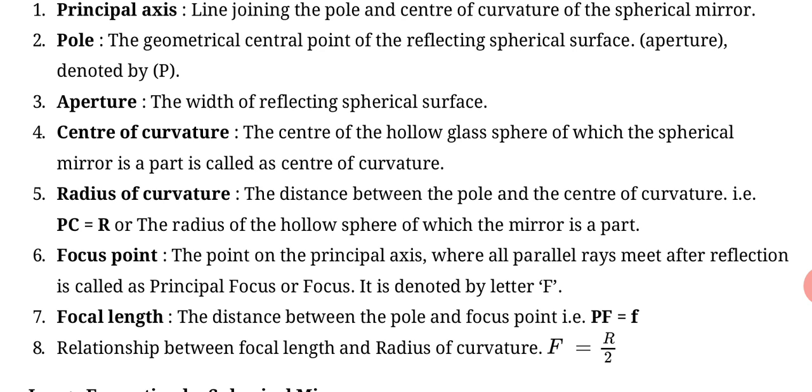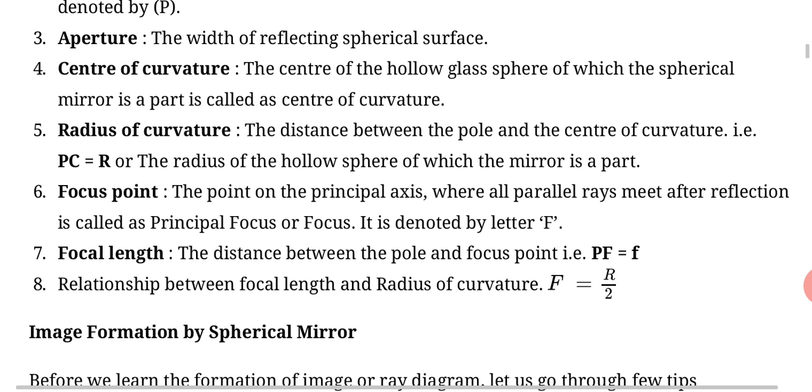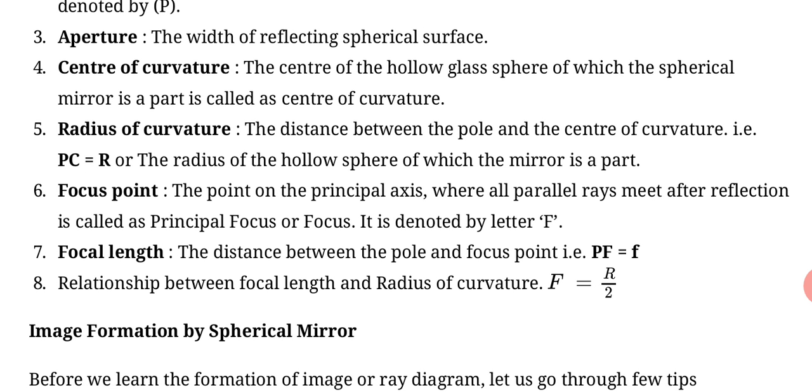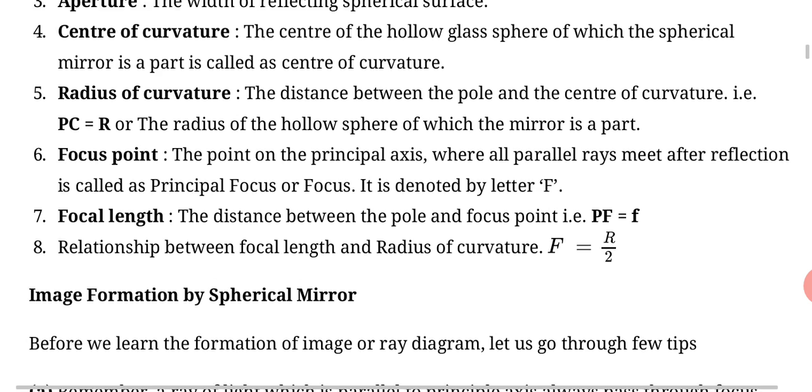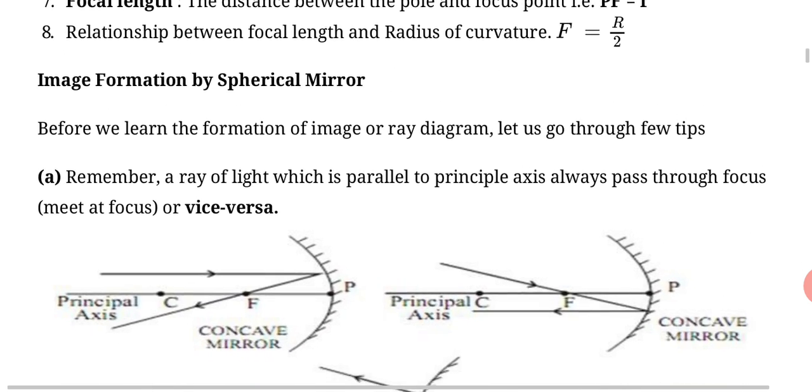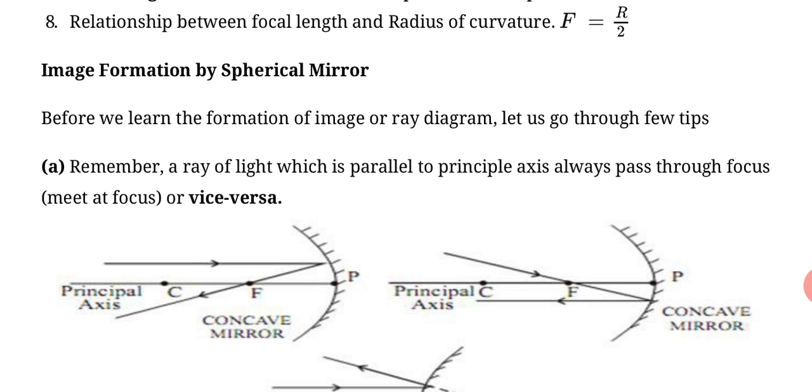Now we will show the relationship between the focal length and radius of curvature. Capital F equals capital R divided by two. It means focal length is half of radius of curvature. Now we will learn image formation by spherical mirror and before that we will learn the rules and regulations.